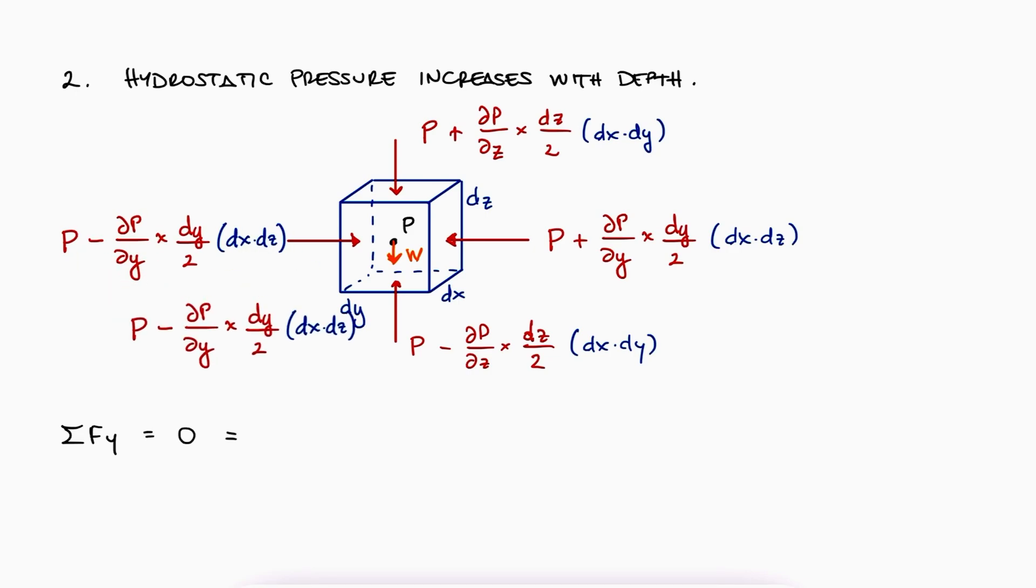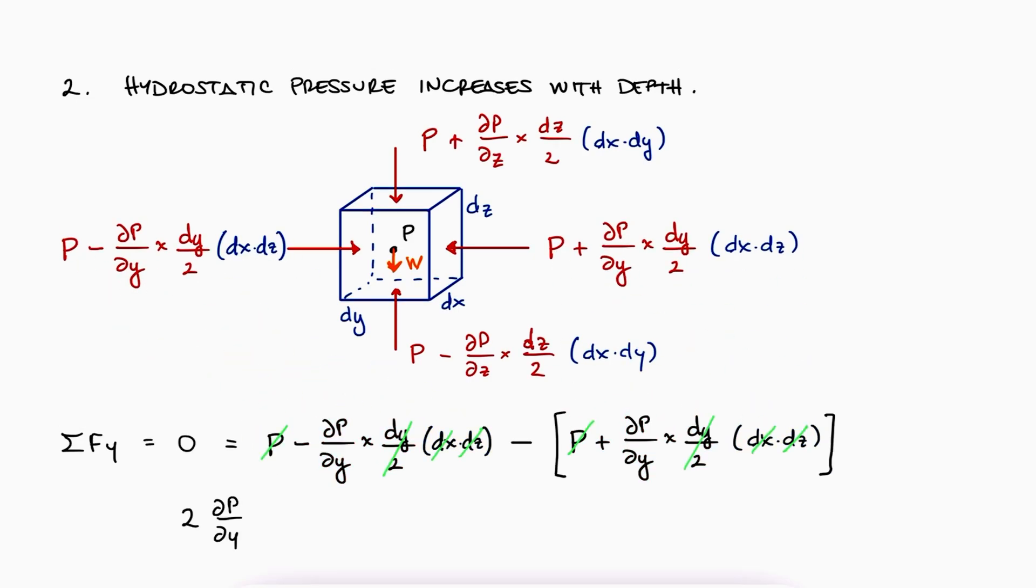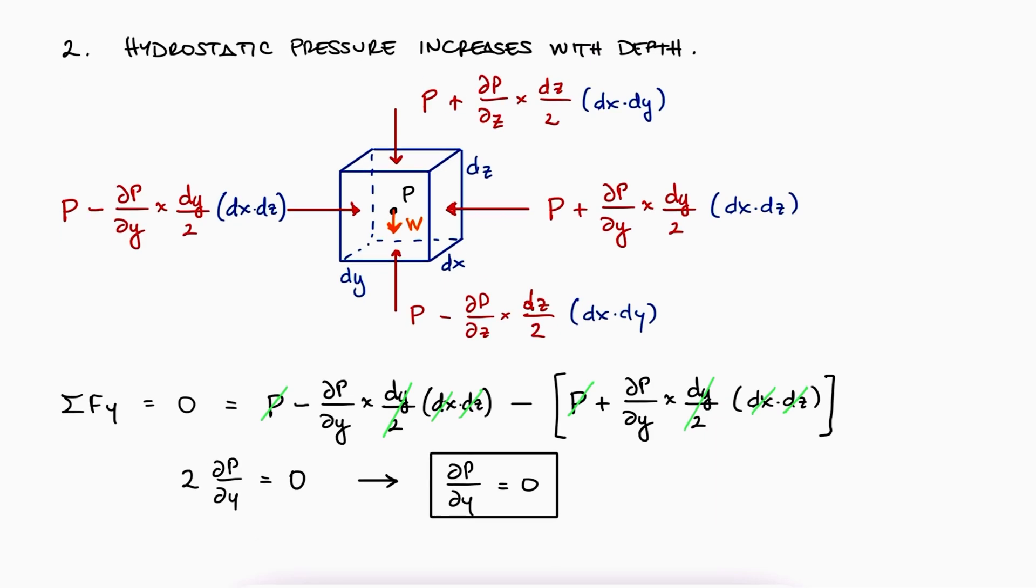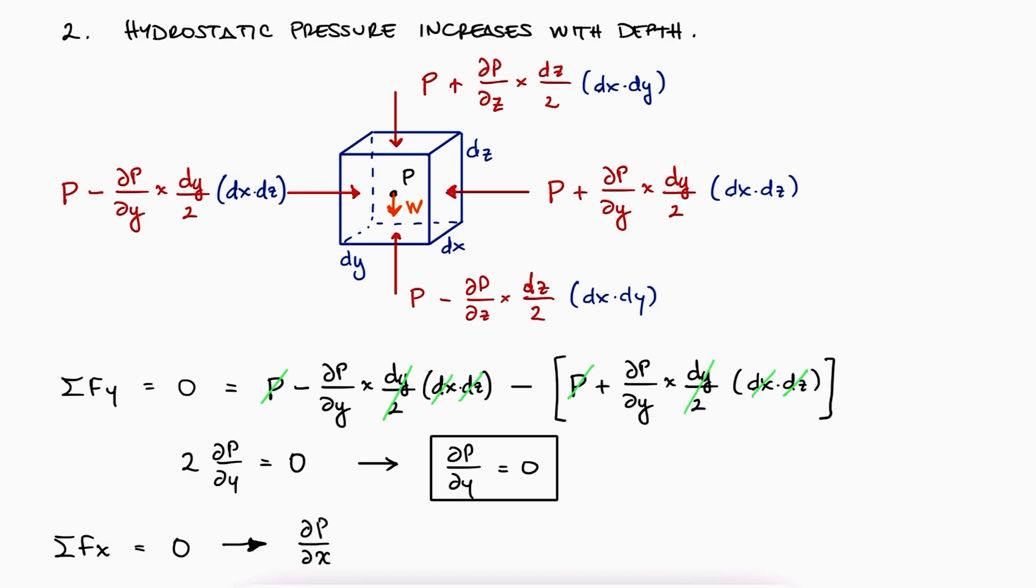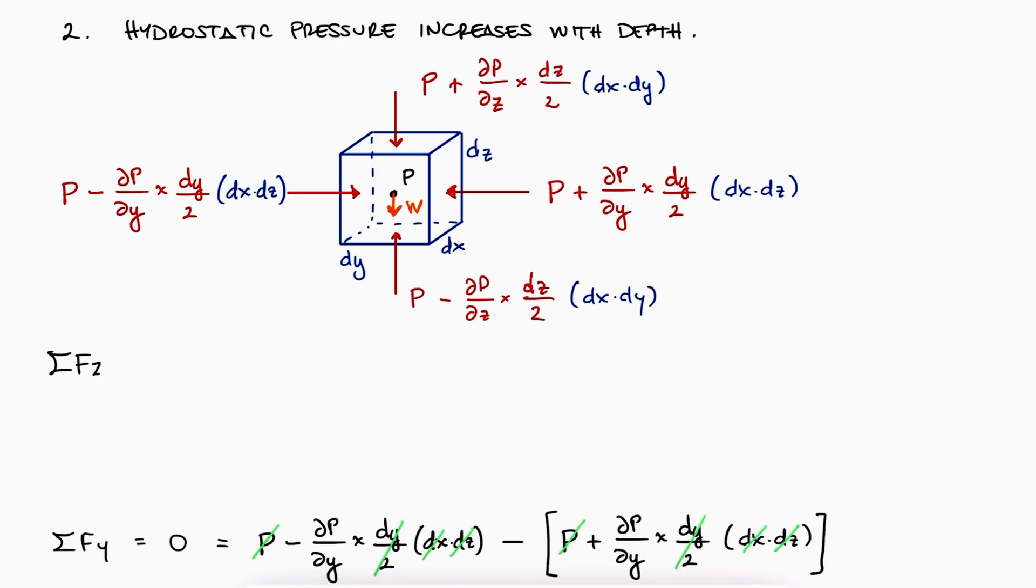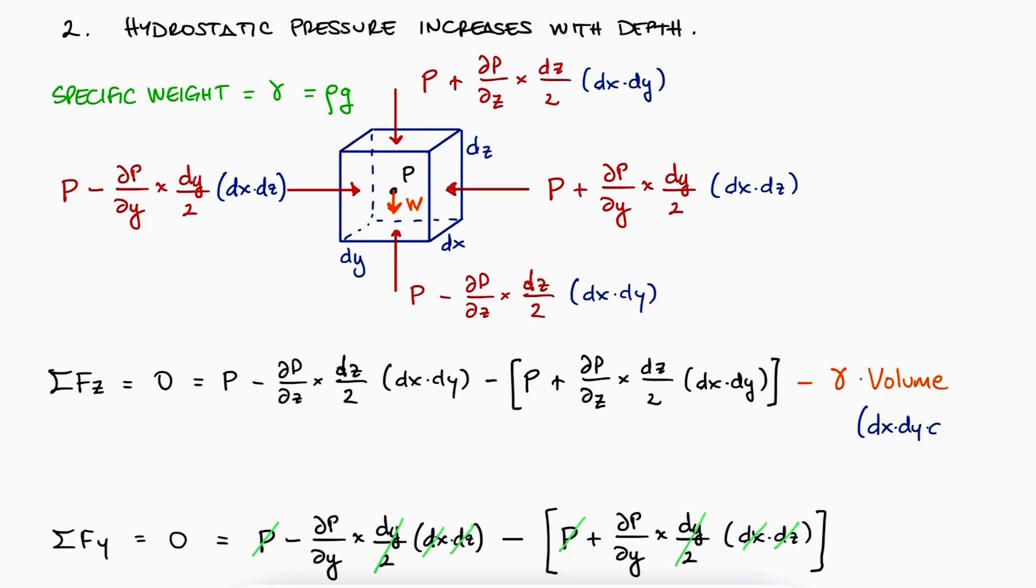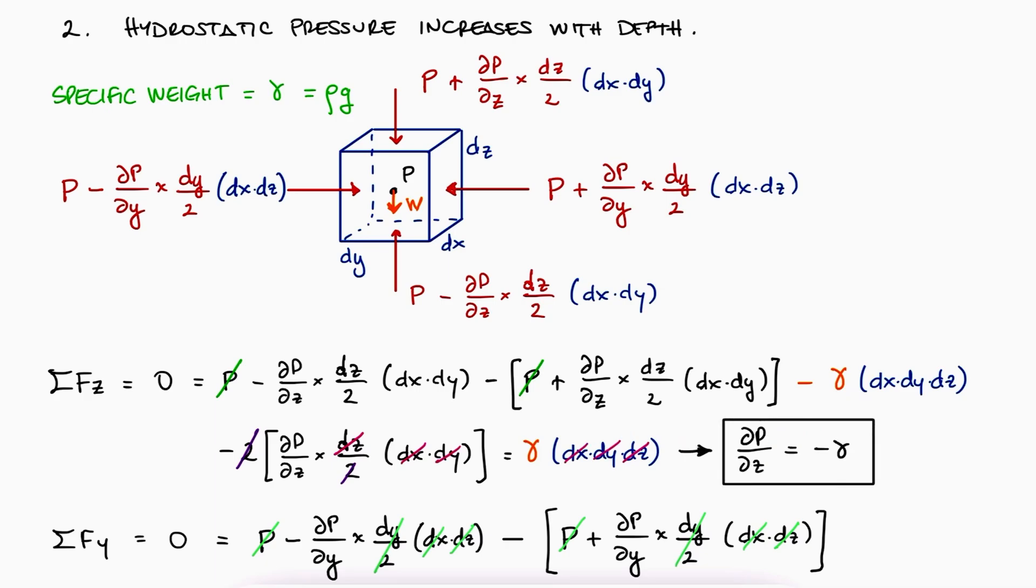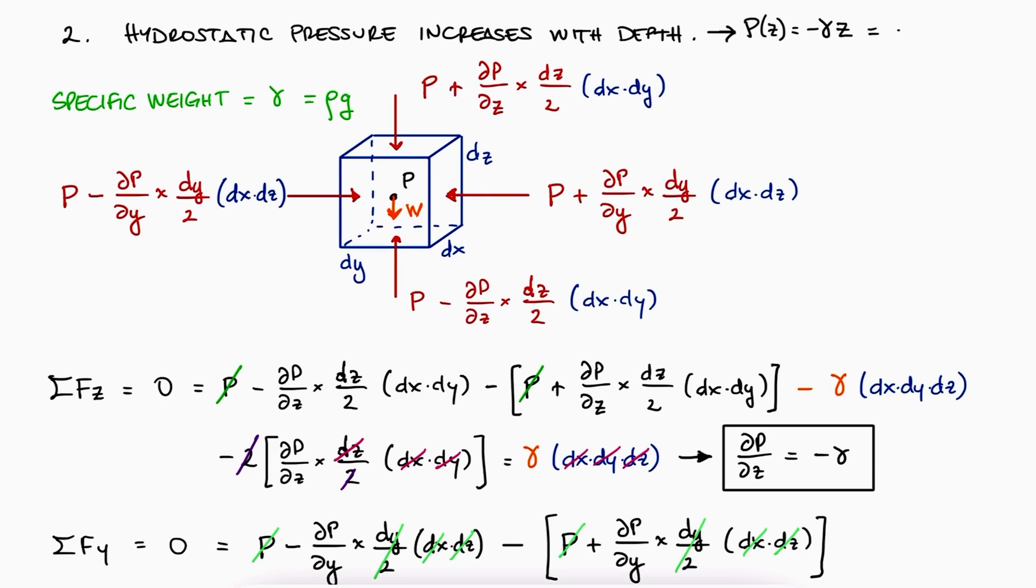Therefore, for sum of forces in y, for example, we would get that the partial derivative of P with respect to y is zero. When we do the sum of forces coming in and out of the screen, meaning sum of forces in x, we would get the same for partial x of P. However, when we do the sum of forces in z, we are going to find the weight of the fluid element itself. If we use this specific weight property that we talked about during the last video, gamma, link below, the weight can be written as gamma times the volume of the element dx times dy times dz. Solving for partial z of P, we see that the change in pressure in the z direction is equal to the negative value of gamma, or what is the same, that the pressure increases when we go deeper.